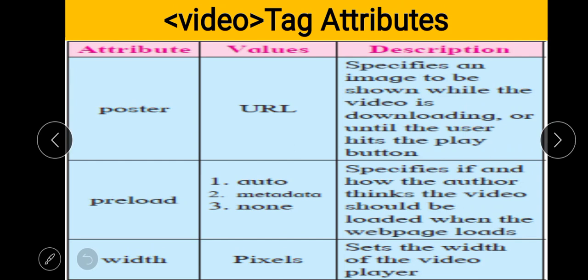The preload attribute has three values: auto, metadata, and none. It specifies if and how the author thinks the video should be loaded when the web page loads. With metadata you can add extra information about the video; with none, the video plays as-is by default; with auto, content is automatically loaded. The last attribute is width, specified in pixels, which sets the width of the video player.